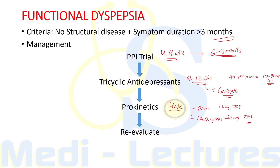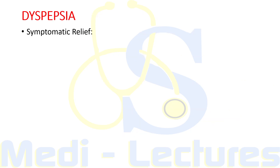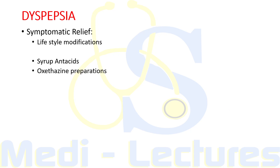Even after prokinetics, if symptoms persist, we will evaluate gastric emptying. It is important to counsel patients regarding PPIs and tricyclic antidepressants, as these drugs take at least a few weeks to start their action. For immediate relief, we can ask the patient to take antacids containing aluminum hydroxide and magnesium hydroxide. There are certain oxethazaine preparations containing antacids like Mucaine Gel, which helps in immediate relief in patients of GERD and heartburn.